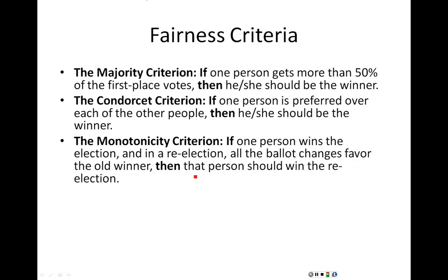For example, say you have candidates A, B, C, and D, and in your first election candidate A wins. Maybe it's a pre-poll and then the actual vote. If candidate A is winning and candidate C is losing, then when you do the re-election and everybody who used to vote for candidate C now votes for candidate A, you should still expect candidate A to win. That's what the Monotonicity Criterion says: if all the changes favor the old winner — so A is now getting more votes — then that person should really win the re-election, probably by even more than originally.